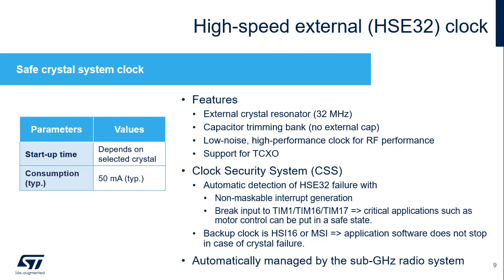The High Speed External Oscillator, or HSE32, provides a safe crystal system clock. It supports a 32 MHz external crystal or temperature-controlled oscillator, and the frequency can be tuned to the required few one-tenth of ppm using on-chip capacitor trimming. A clock security system allows automatic detection of HSE32 failure. In this case, a non-maskable interrupt is generated, and a brake input can be sent to timers to put critical applications, such as motor control, in a safe state. When an HSE32 failure is detected, the system clock is automatically switched to HSI-16 or MSI, so the application software does not stop in case of crystal failure. The use of the HSE clock is mandatory when the sub-gigahertz radio is active.